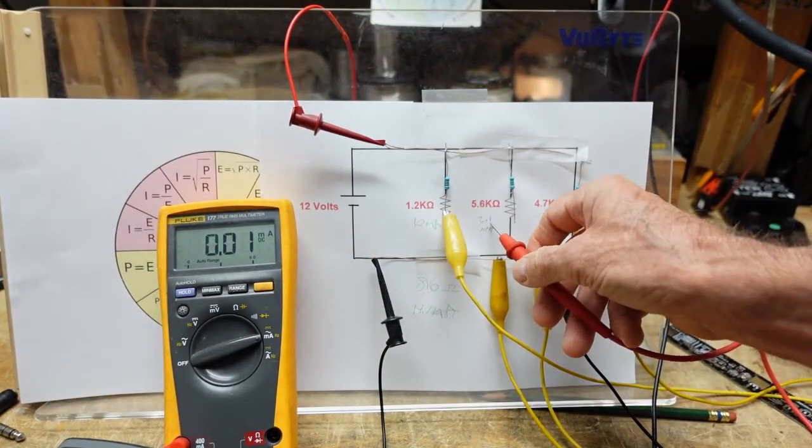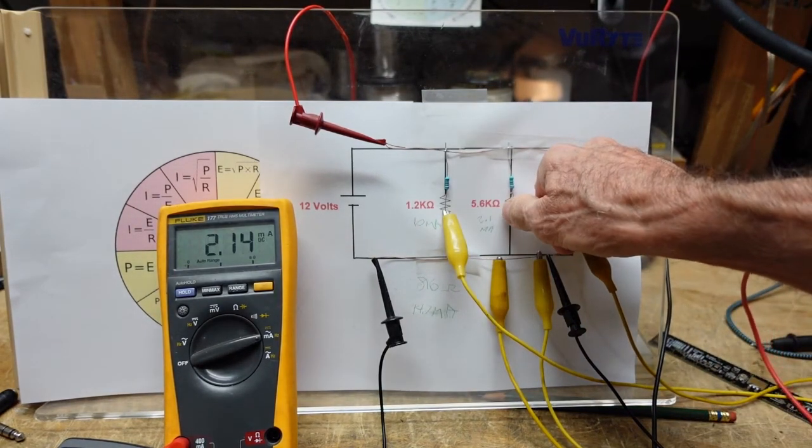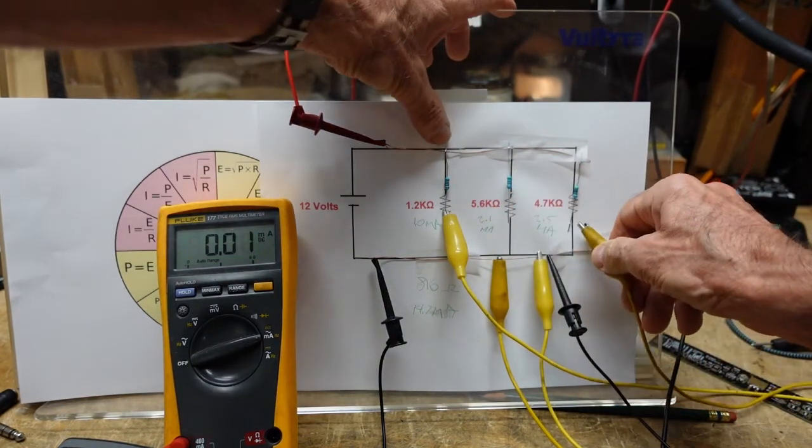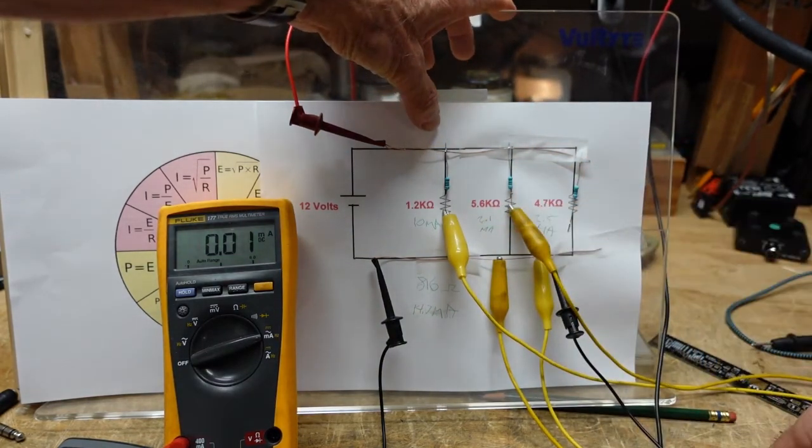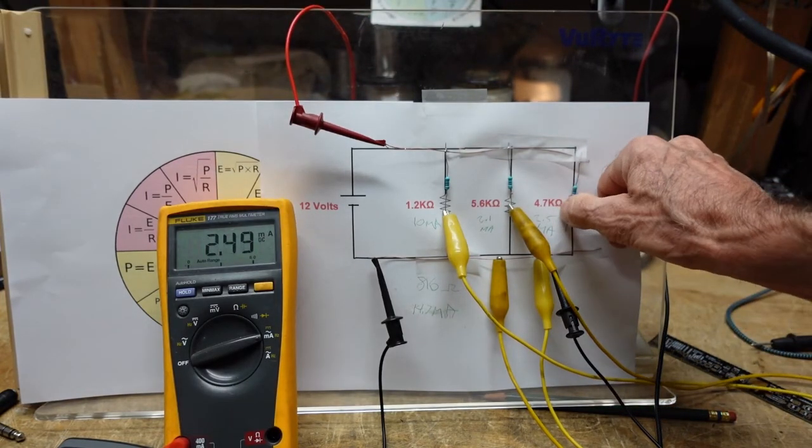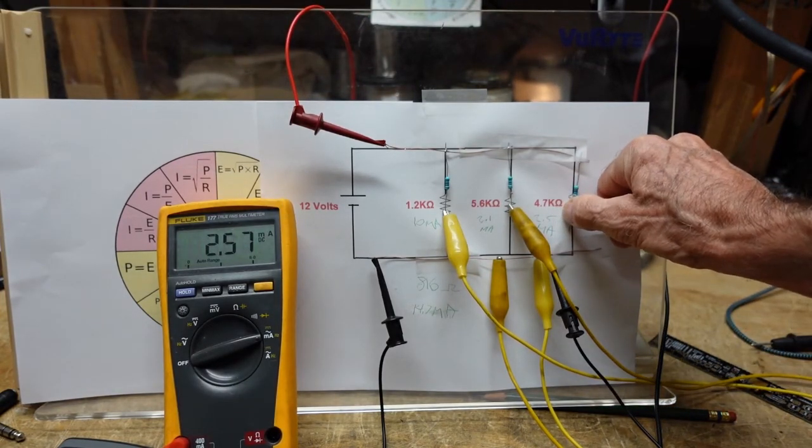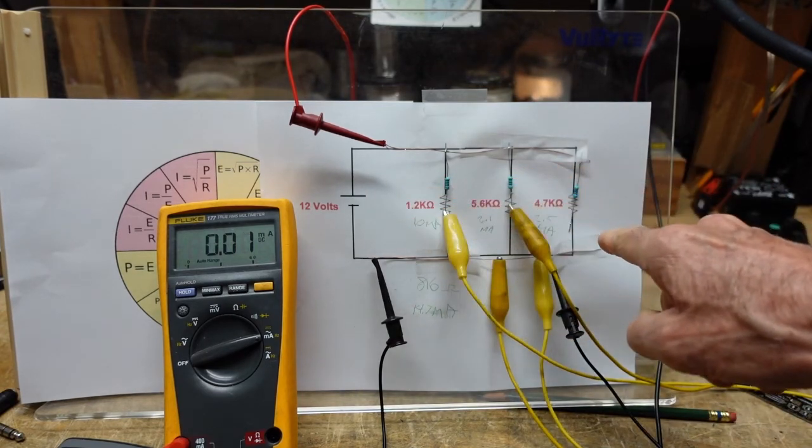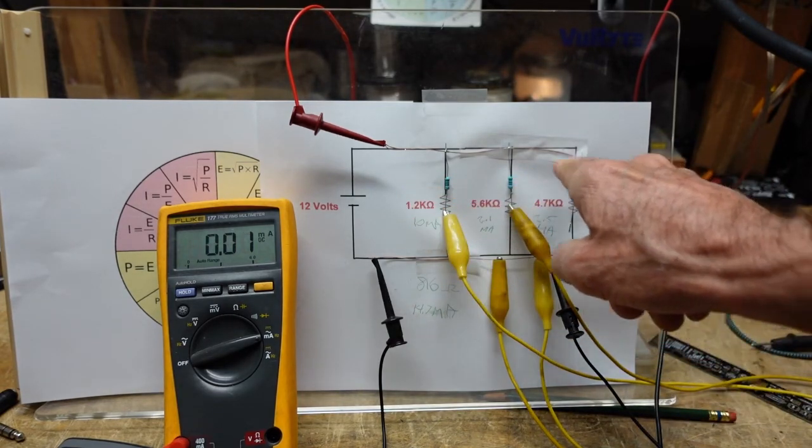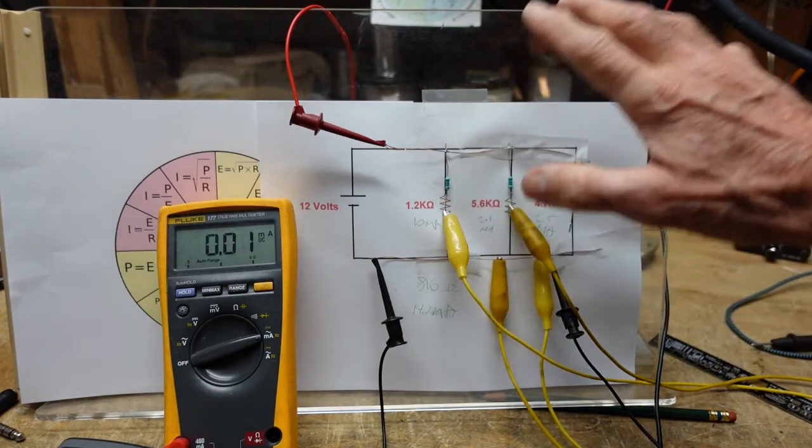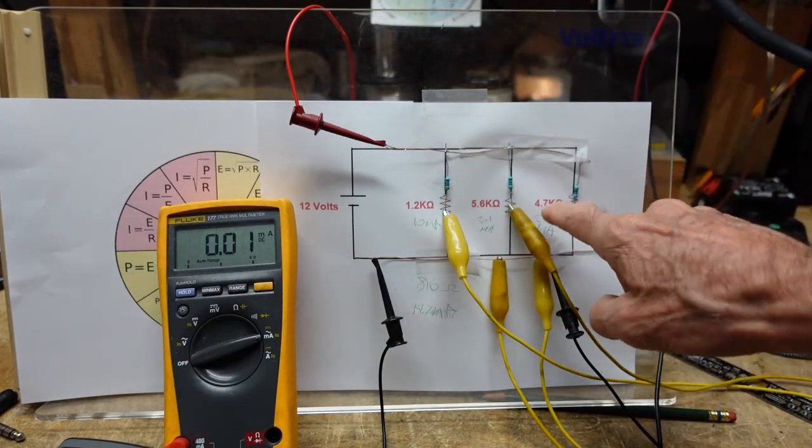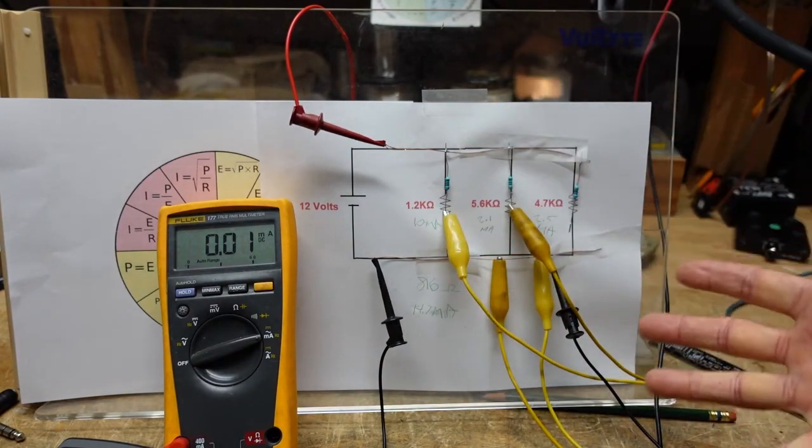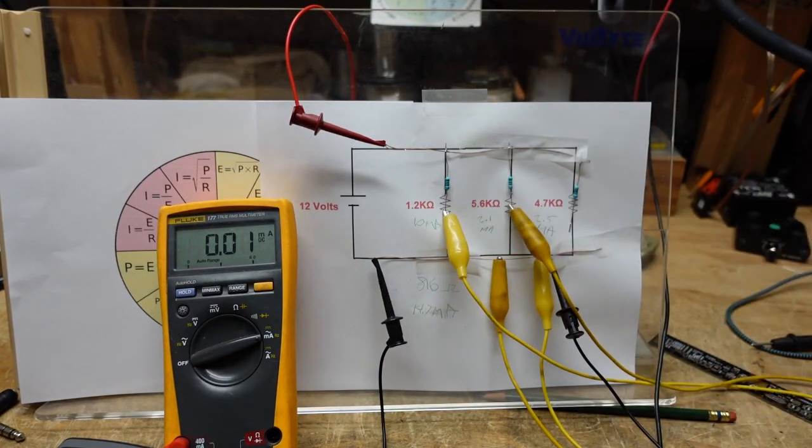We calculated 2.1 milliamps here, we get 2.14. And lastly we calculated 2.5 here and we got 2.57. Now again some of this is rounding errors and some of this is the fact that the tolerance of these resistors may be a little above or below the stated values, but you can see the math works. That's the whole point we're trying to get across here.